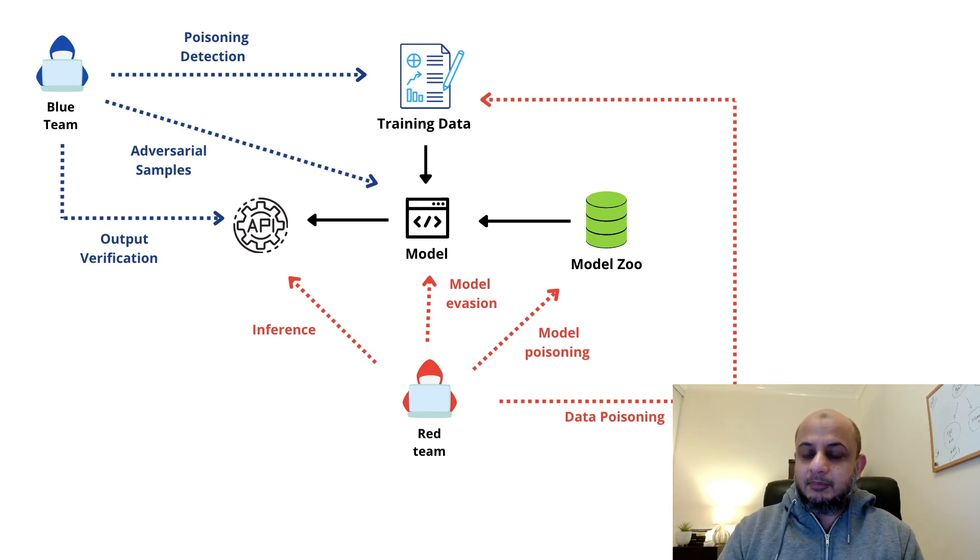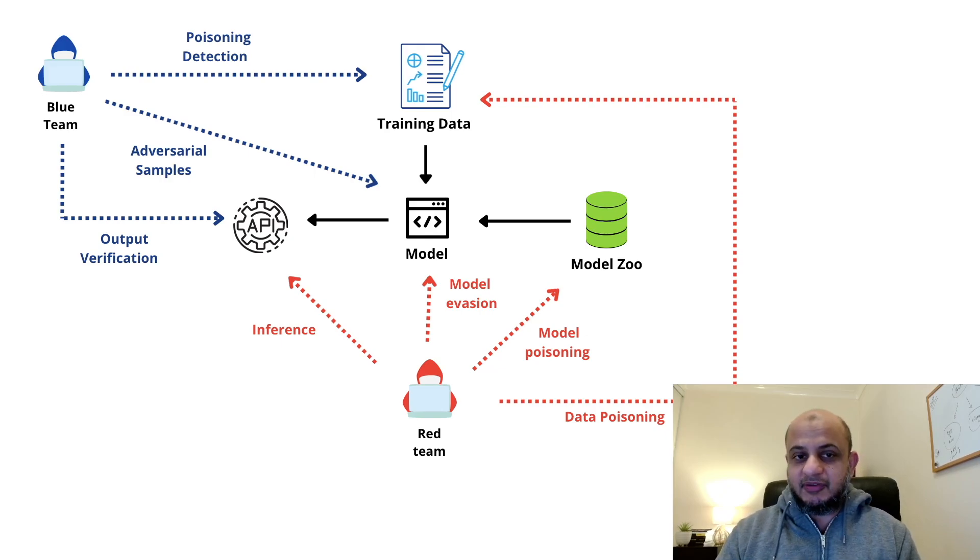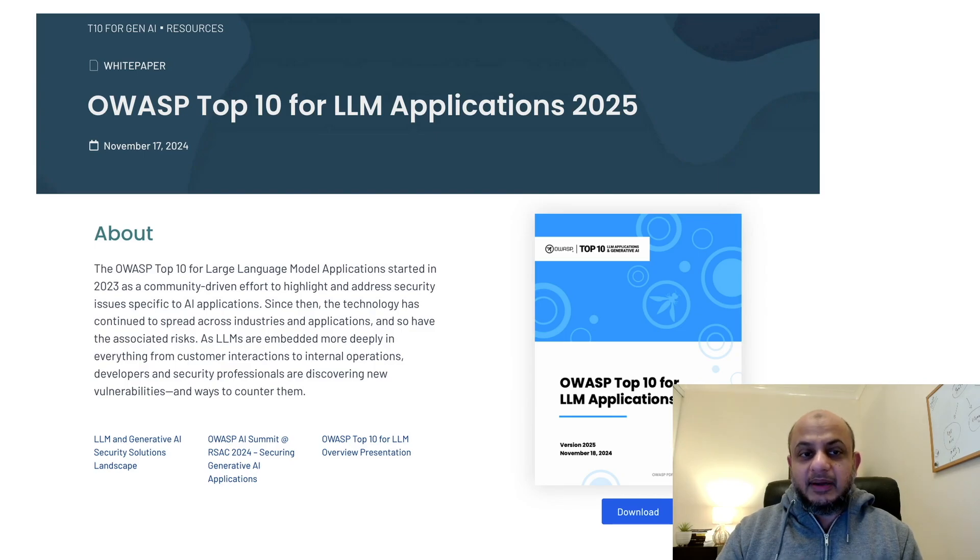Because you would not understand what data poisoning is, or what model evasion is, if you haven't understood the basics first. But these are the sort of controls you want to think about now, putting in AI security controls. You can use the MITRE Atlas framework, because they talk about implementing the specific security controls that are there to protect against these sort of attacks. You want to learn about these topics like data protection, secure model training, testing and validation, and monitoring and auditing AI systems. And what are the resources that are there? You can look at MITRE Atlas framework, the OWASP top 10 for LLM applications has been updated, it's quite a good resource. It shows you all the sort of controls that should be there for Gen AI applications. The MITRE Atlas framework is also awesome. And it doesn't just cover Gen AI, it covers all sorts of AI attacks. Both of these resources are absolutely amazing. I would recommend you combine it with a framework like the AWS one or the NIST one to get a holistic view of all the sorts of attacks.